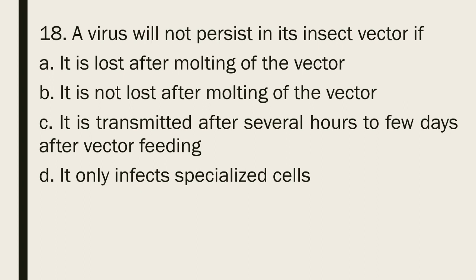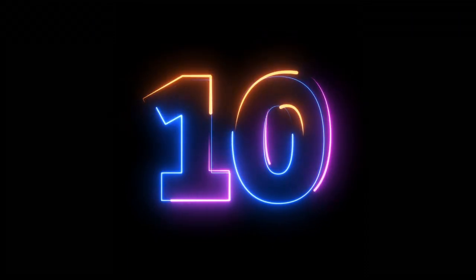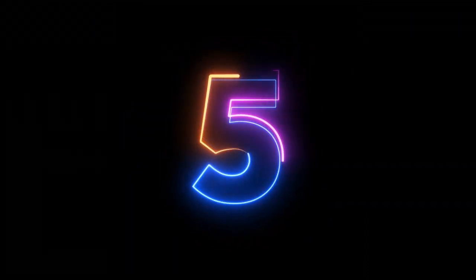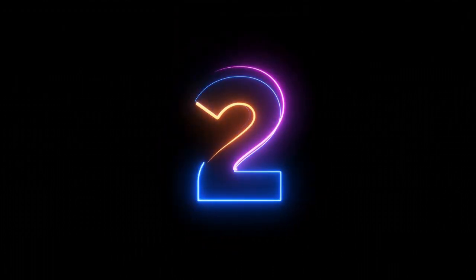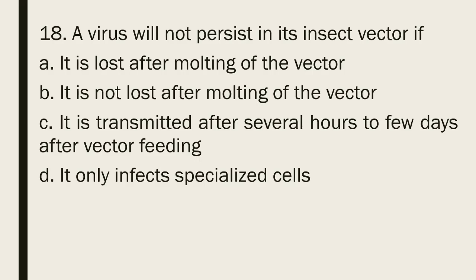Question 18: A virus will not persist in its insect vector if: a. It is lost after molting of the vector b. It is not lost after molting of the vector c. It is transmitted after several hours to few days after vector feeding d. It only infects specialized cells. The correct answer is letter a, it is lost after molting of the vector.